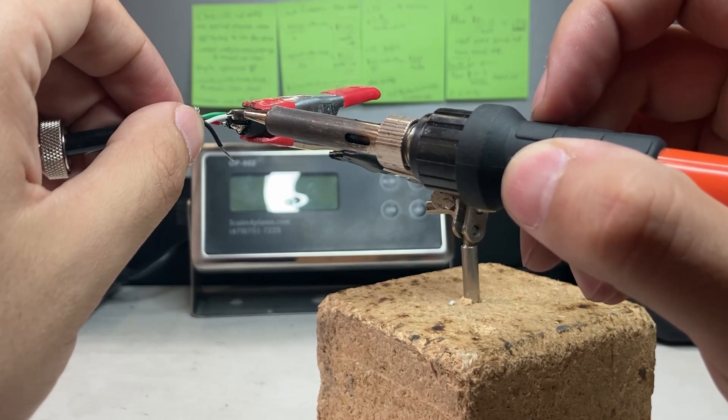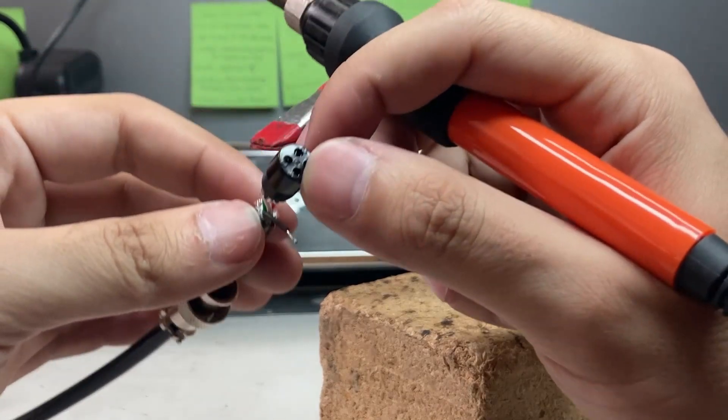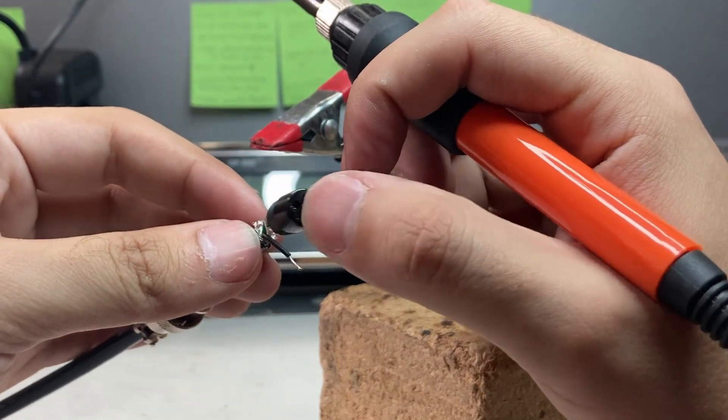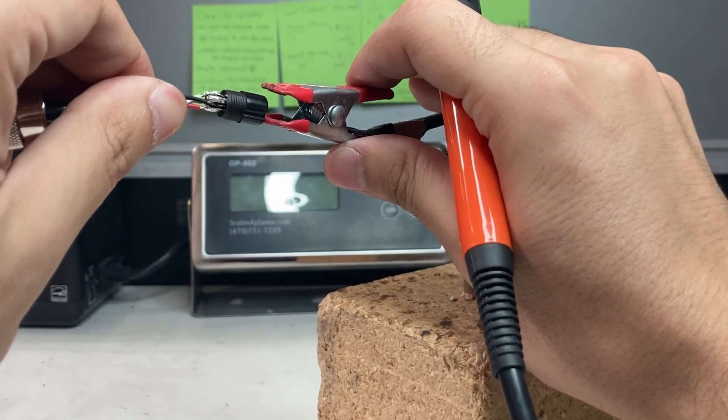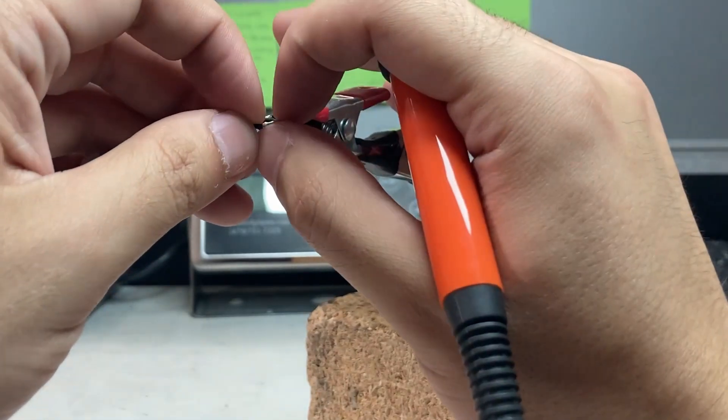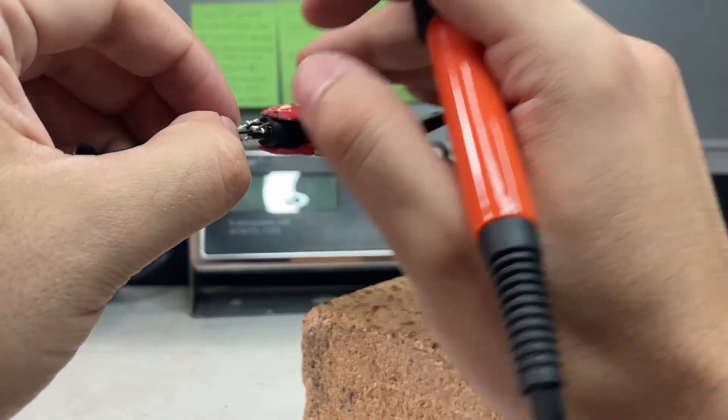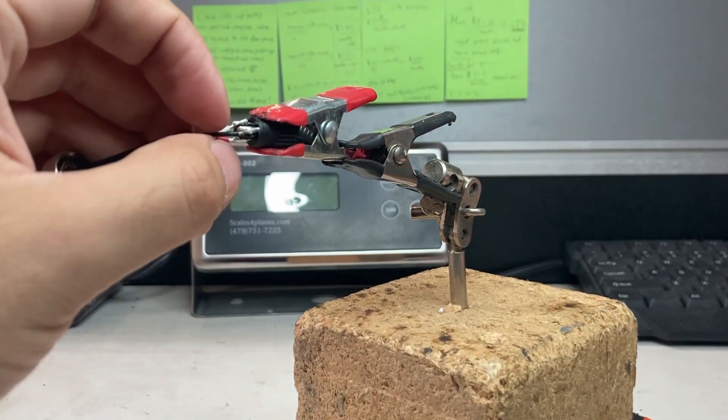Now pin 3 is the white cable. Pin 3 here and white cable. Then my last one is the black cable, pin 4. This one's a little too long.